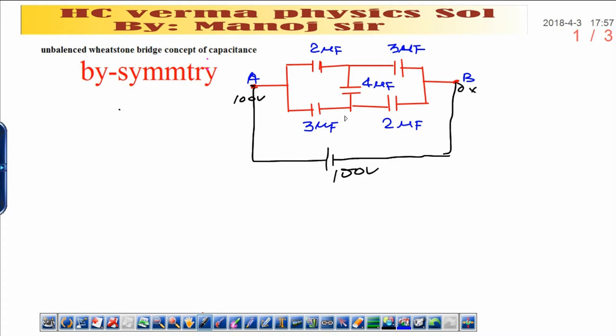Now you have to assume any number at this junction as well as at this junction. At this particular junction I am assuming x potential. Therefore at this particular junction potential will be 100 minus x. I think you have understood it.